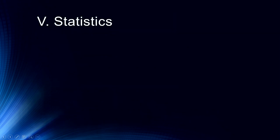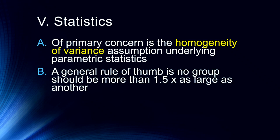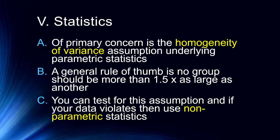Finally we have some statistical considerations, which is our next stopover. So our primary concern in between-subjects designs is the homogeneity of variance assumption underlying parametric statistics. So a general rule of thumb is no group should be larger than one and a half times as large as another group. So if you have a hundred subjects in one group, you could get away with up to 150. That's probably pushing it, but you know that's the kind of general rule of thumb. The biggest thing is you have to test for this assumption. And if your data violates the homogeneity of variance assumption, and most statistics packages will do this for you, then you want to use non-parametric statistics.